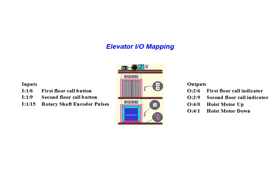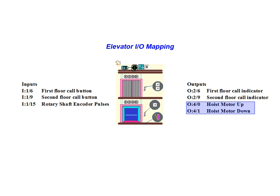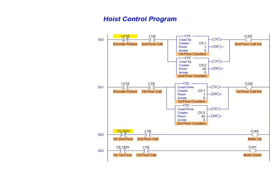In terms of outputs, the first floor call indicator is connected to output REC 2 bit 6. The second floor indicator is connected to output REC 2 bit 9, and the motor hoist controls are connected to output REC 4 bits 0 and 1. We will now move on and examine the hoist control program for the elevator application.